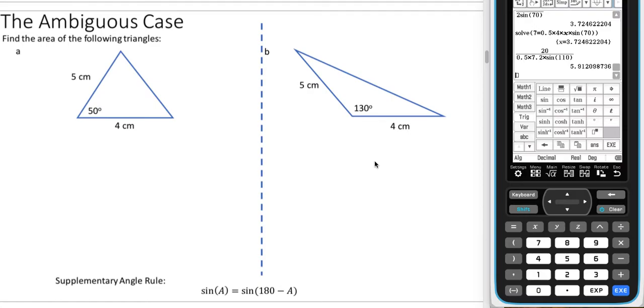In this video we look at the ambiguous case. So we've just simply been given these two examples, find the area of the following triangles, and then we're going to look at the relationship between them.